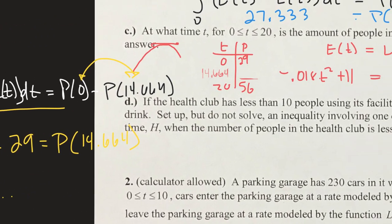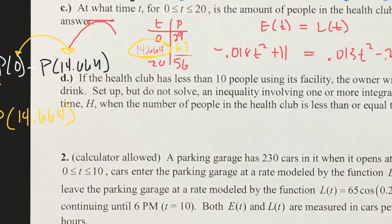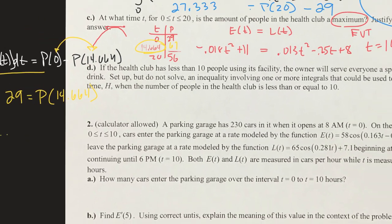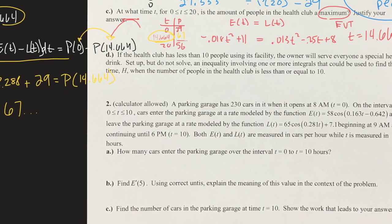So to find the maximum, you find when the rate is zero — when the same number of people are entering and leaving — solve for t, then take the integral from 0 to t to find how many people are in the club. It's similar to what we did before, but you also have to find that t value, which makes it doubly tough.